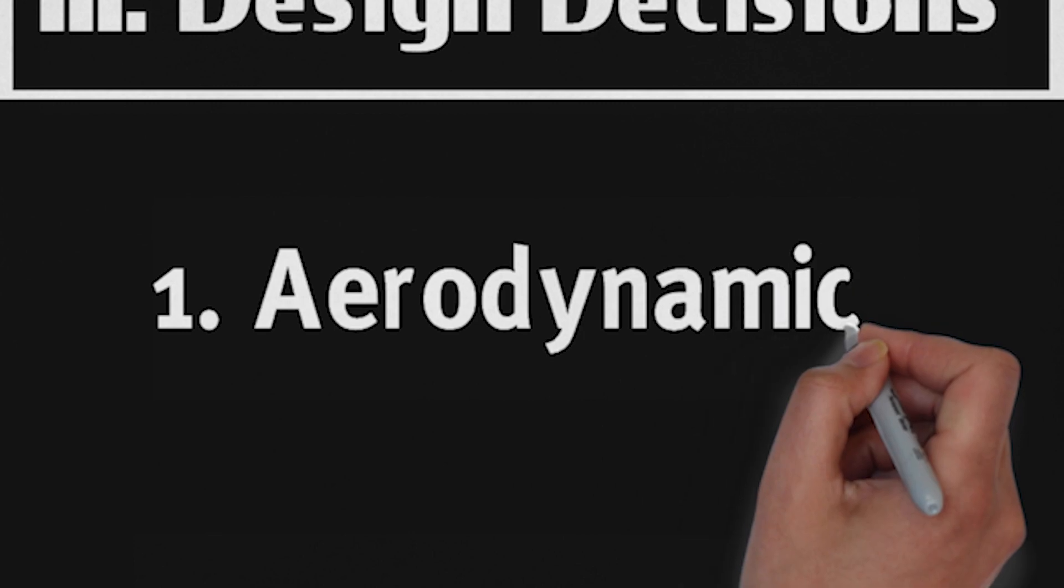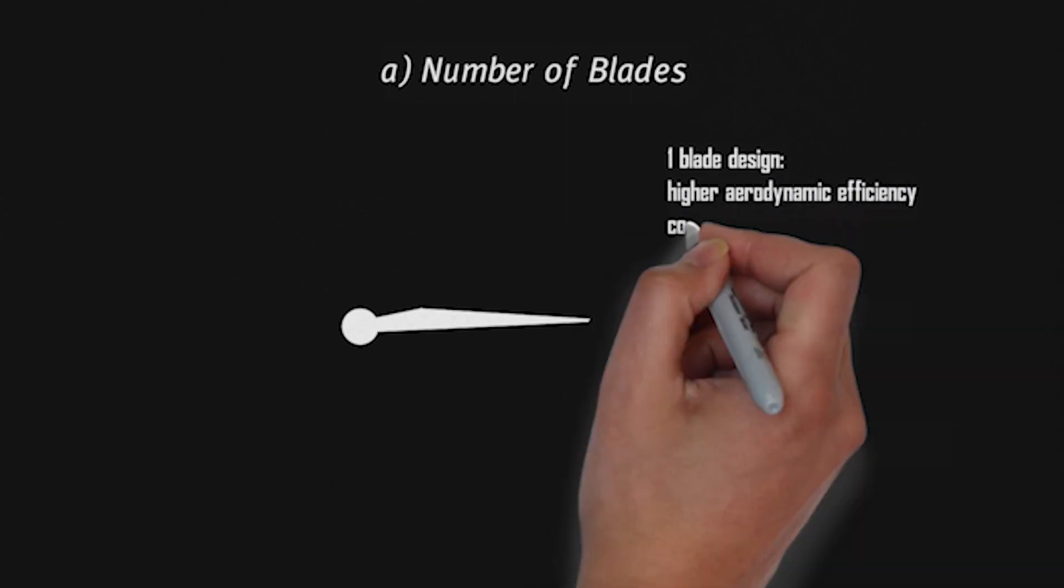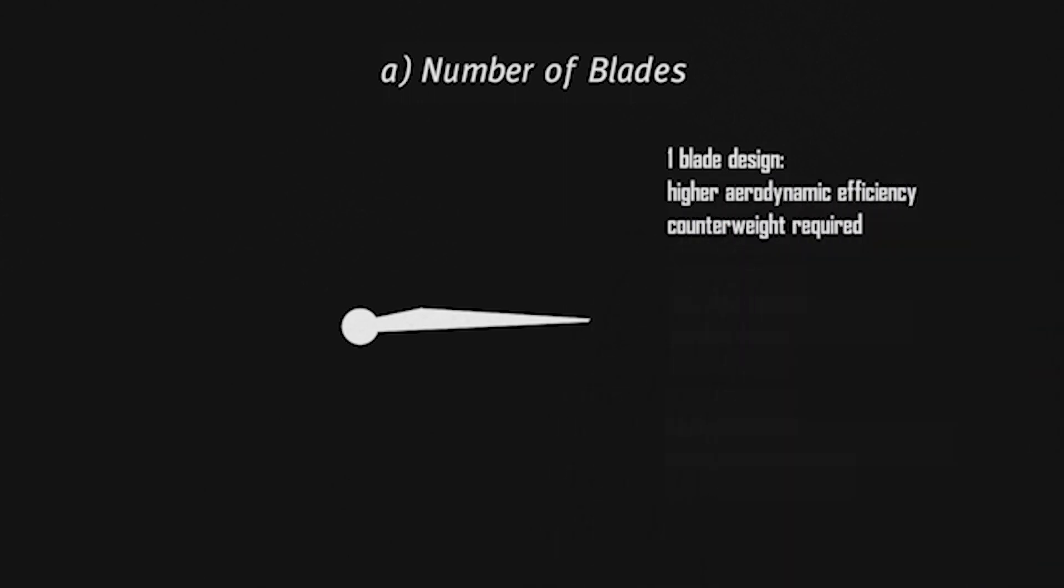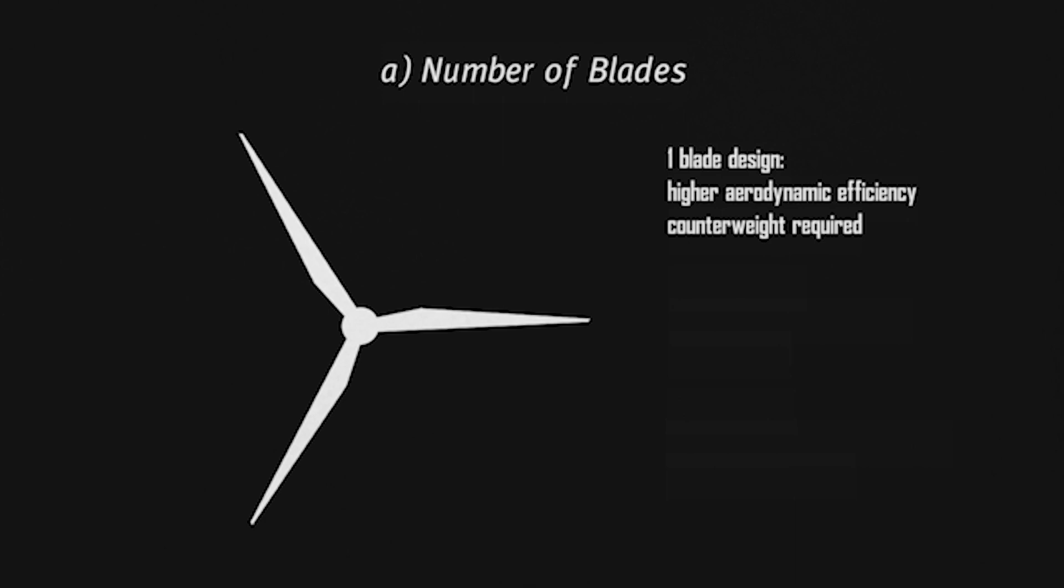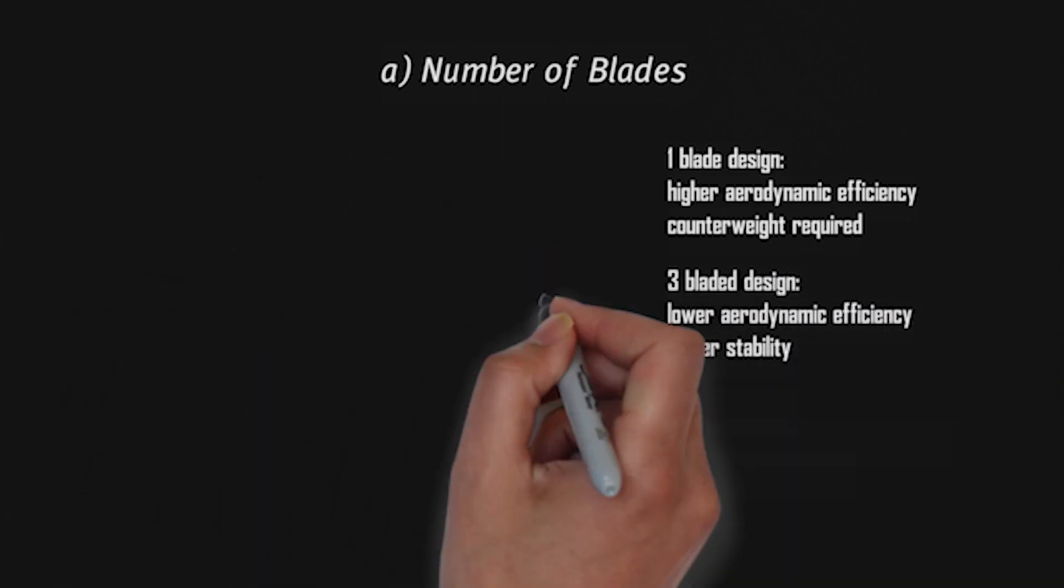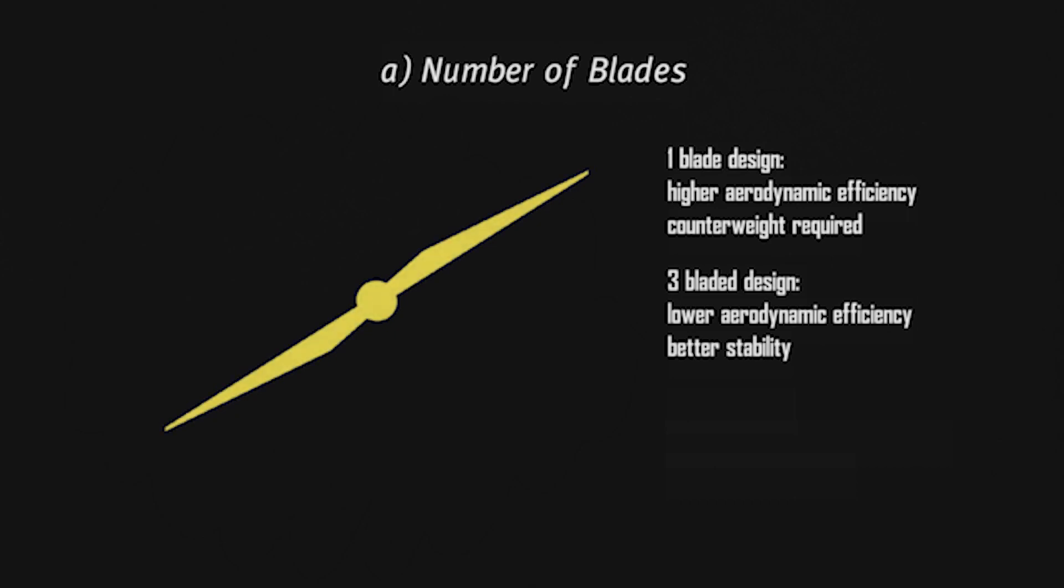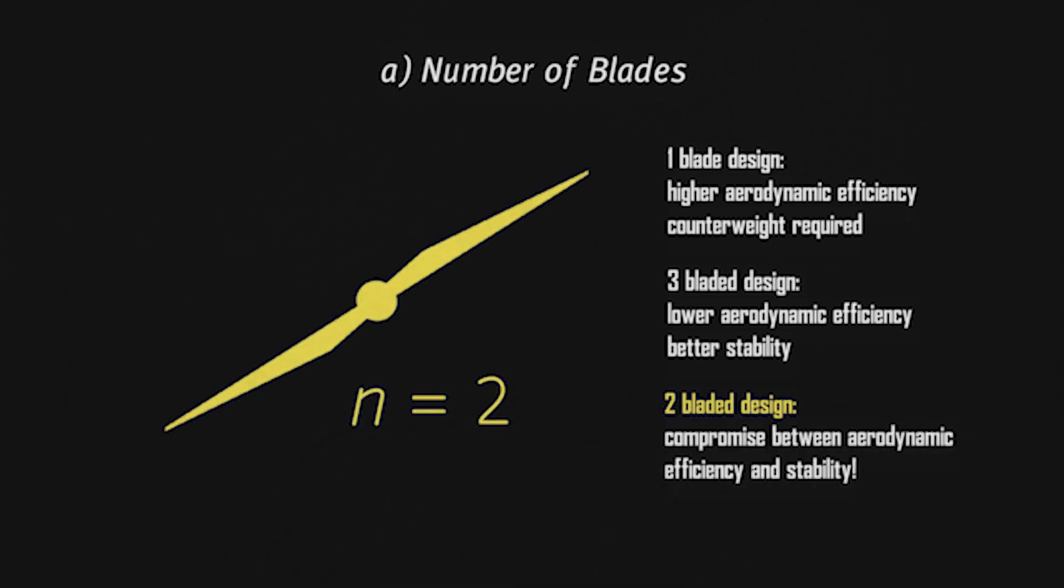Theory done, but what's the plan for our design of the turbine? The one-bladed design is the most aerodynamically efficient with the lowest drag. However, stability is an issue and adding a counterweight would overcomplicate the problem. Less aerodynamically efficient but much more stable are three-bladed designs. These are used for real-size turbines because two-bladed designs are prone to an effect called gyroscopic precession, resulting in stability problems. However, this should not be an issue in a wind tunnel experiment, so a two-bladed design gives the best compromise between aerodynamic efficiency and stability.